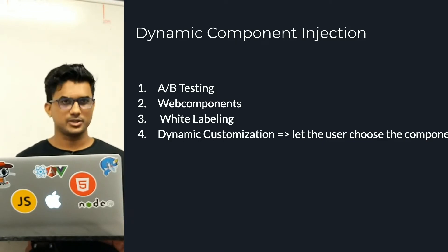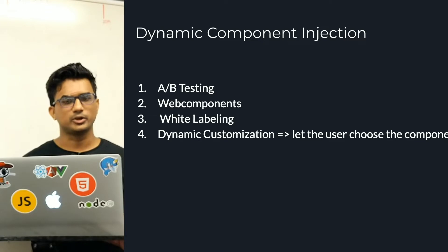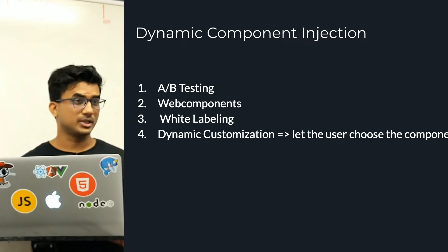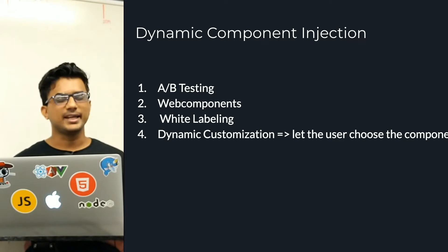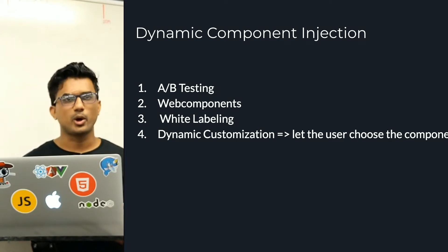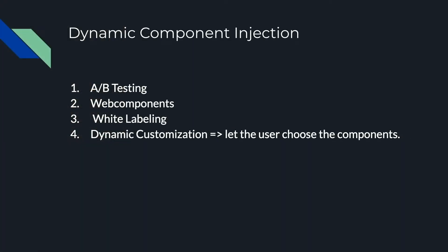The reasons we want dynamic component injection: if you want to inject a component without using a router — for example, A/B testing, web components (which don't have routers), or implementing a white label product where you want to see how it looks for a specific tenant. Also dynamic customization, where the user chooses what components to display.